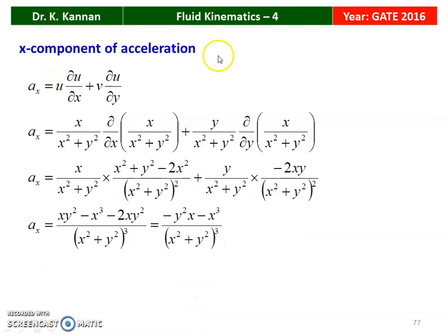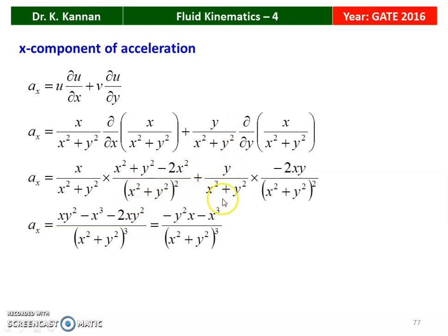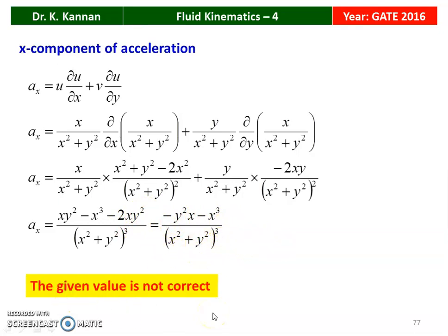For the X component of acceleration: AX equal to U(dou U/dou X) plus V(dou U/dou Y). Substituting and differentiating, the numerator becomes XY² minus X³ minus 2XY², which gives minus X(Y² + X²), divided by (X² + Y²)³, simplifying to minus X/(X² + Y²)². The given value in statement 4 is not correct. So option 4 is incorrect and option 2 is also not correct. The correct answers are 1 and 3.